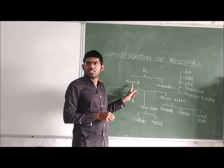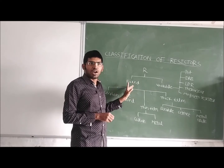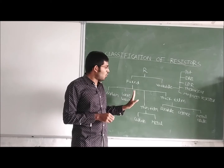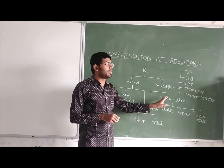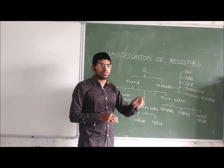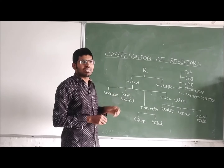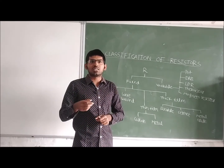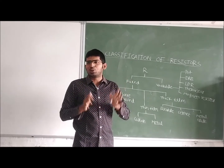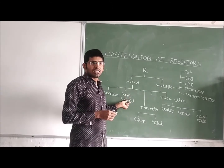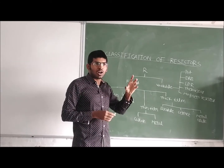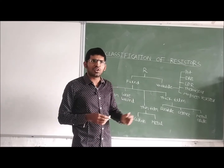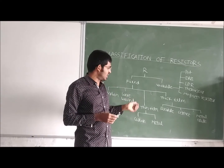In the fixed resistor category, we have further classified them as carbon, wire wound, thin film, thick film, fusible, cermet, and metal oxide. Carbon resistors are used for very high values. Wire wound resistors are used when we want to operate with a huge amount of current.